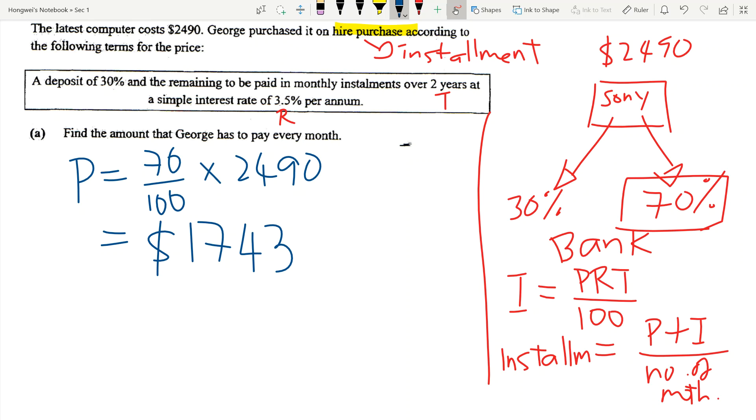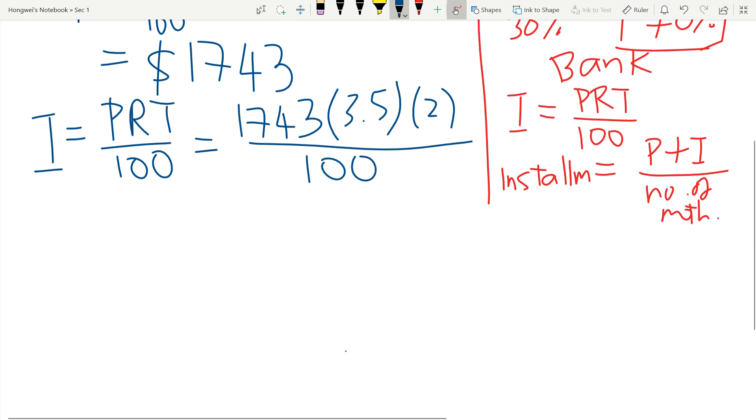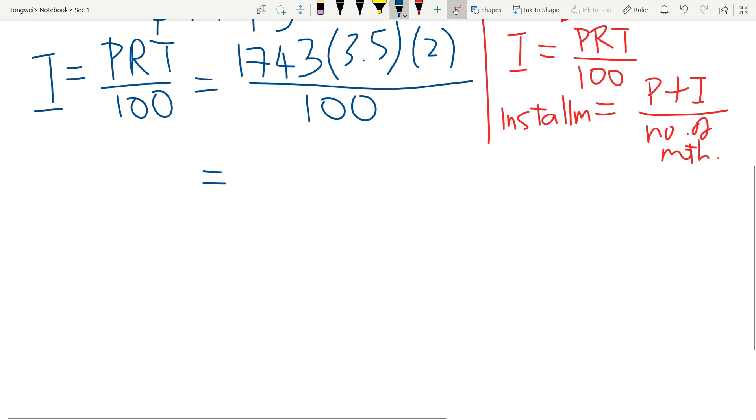I should write the formula again so that you all can remember: I = PRT/100. So for the purpose of being able to see the question, I will just write my equal here, which is not the correct practice. The correct practice is you'll be writing the equal below. P is 1,743, R is 3.5, the time is 2 years, over 100. Input this into your calculator, you will be able to get $122.01.